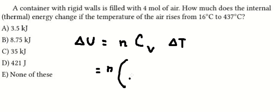And Cv that is about 5 over 2. And this one we have T number 2 minus T number 1.